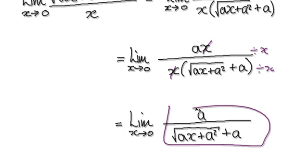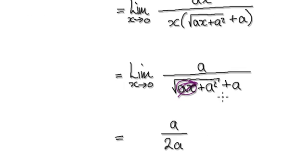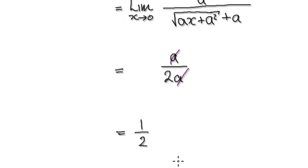So now nothing breaks down. As x tends to zero, this thing here will tend to zero. So this thing here disappears, leaving you square root of a squared. That square root of a squared will be a. So here you've got another a here. That will then give you two a. So the limit is a half.